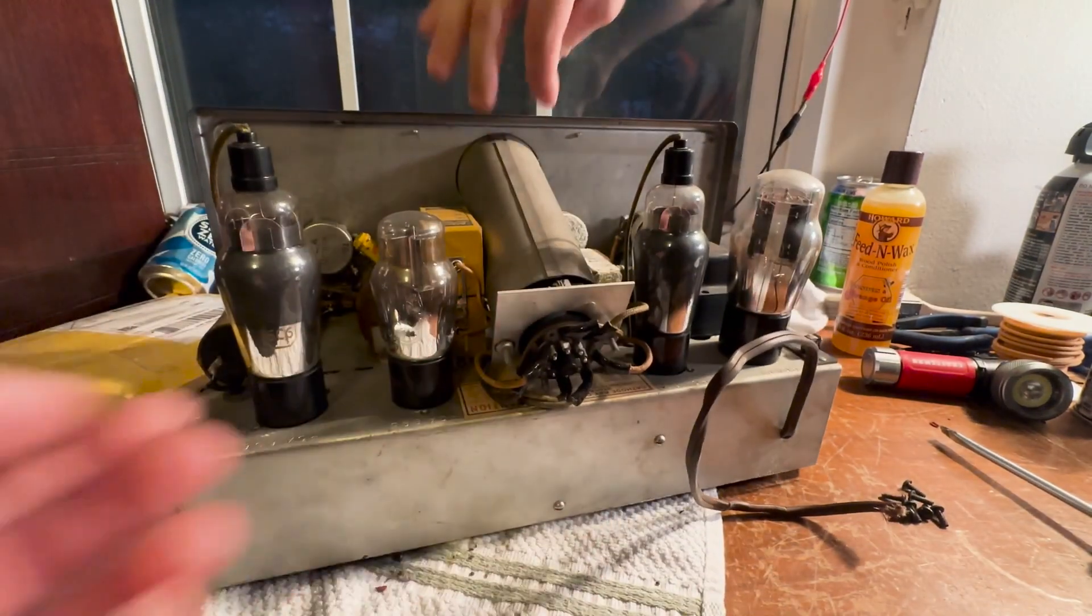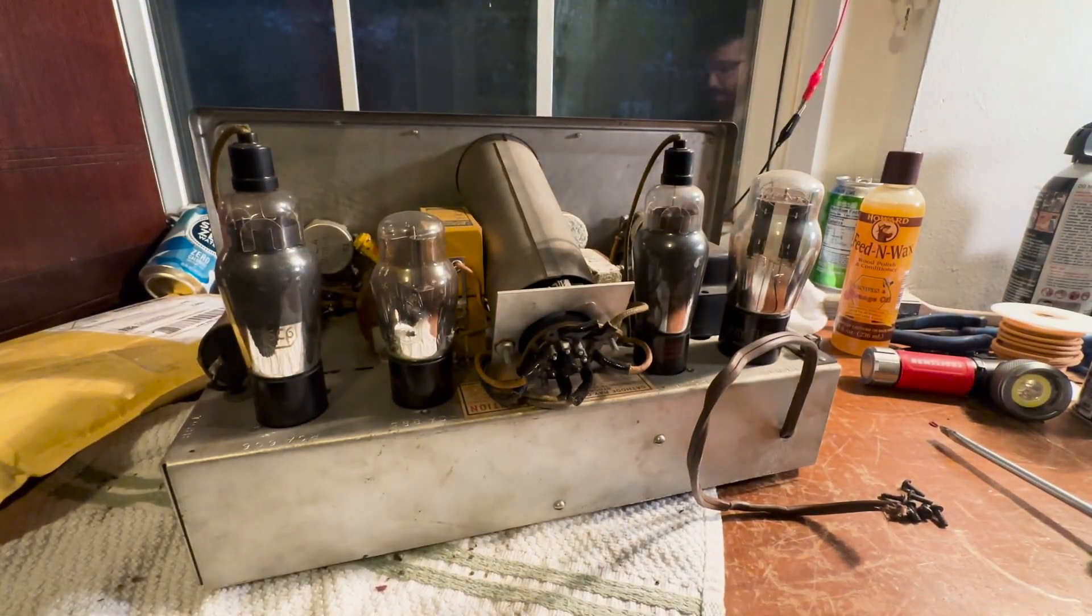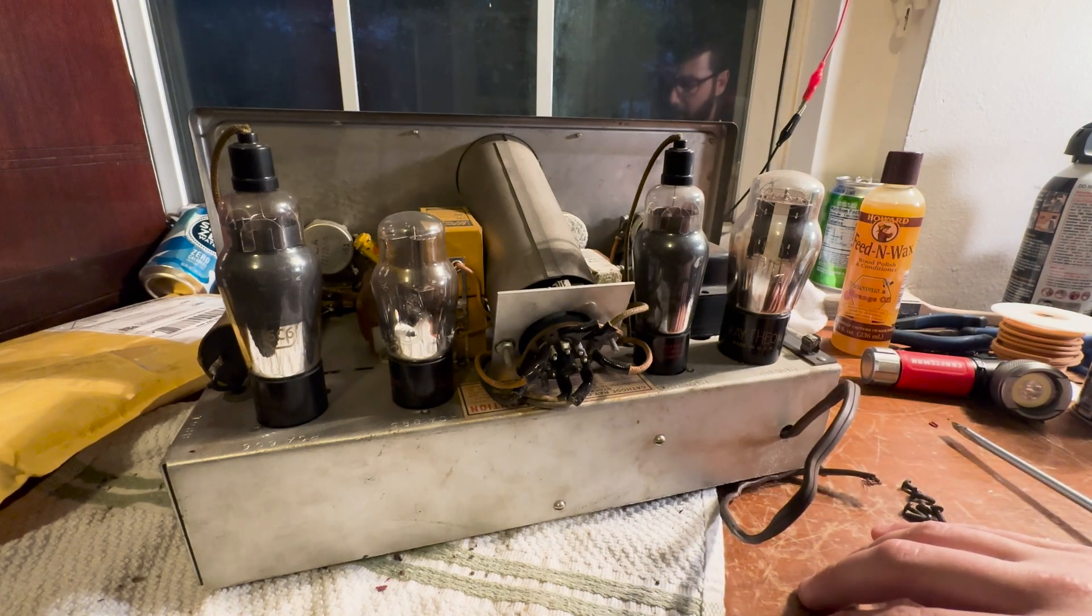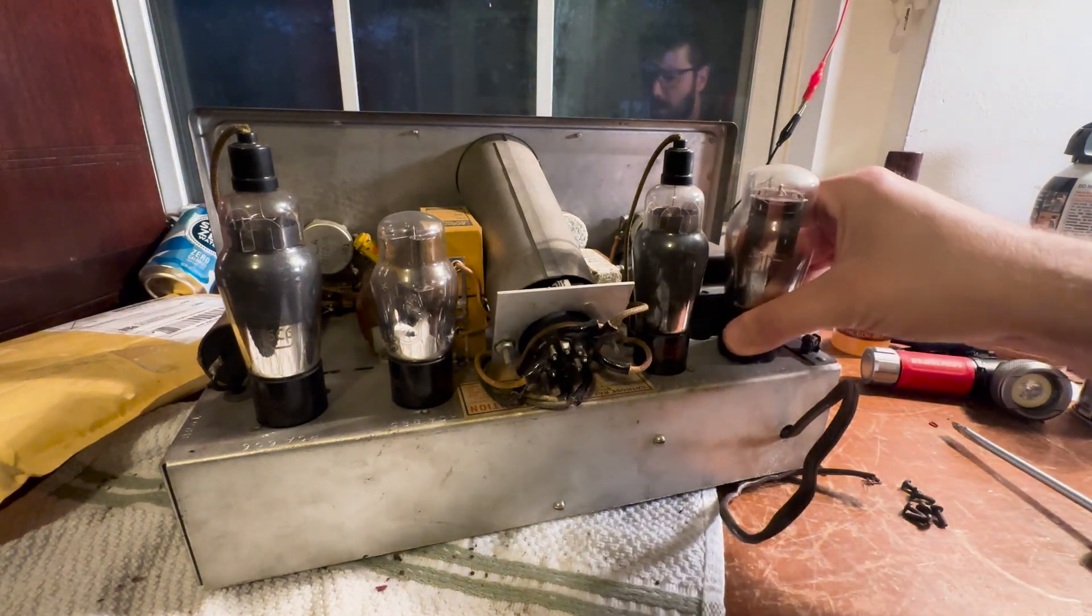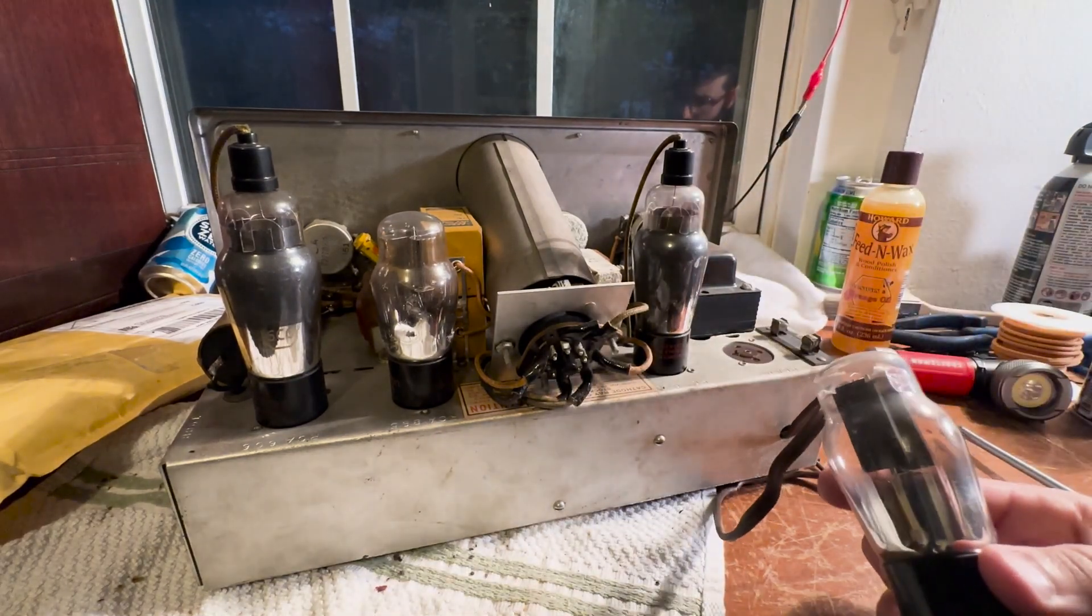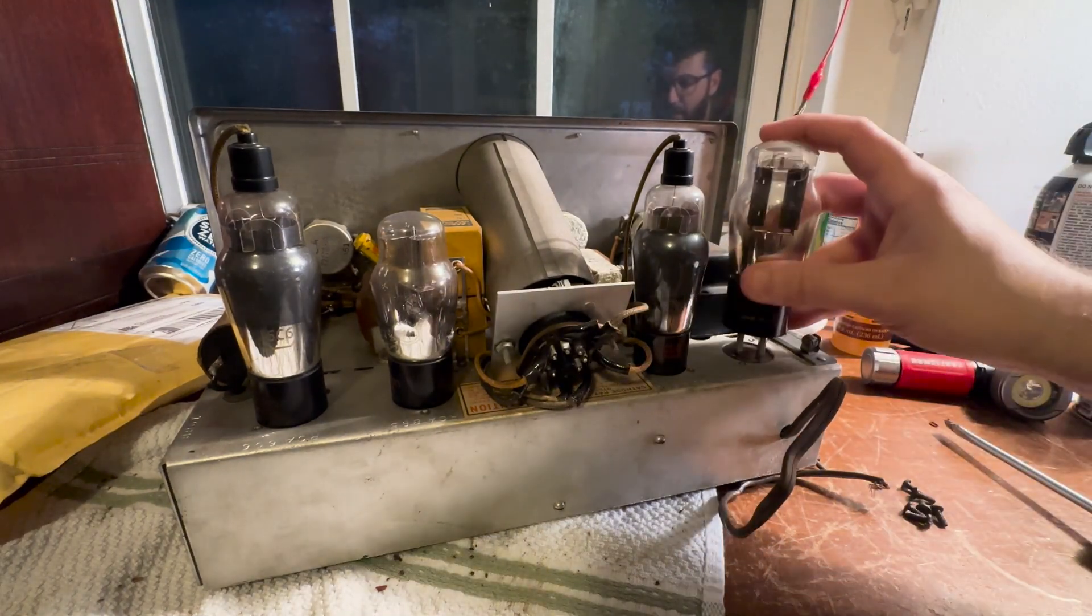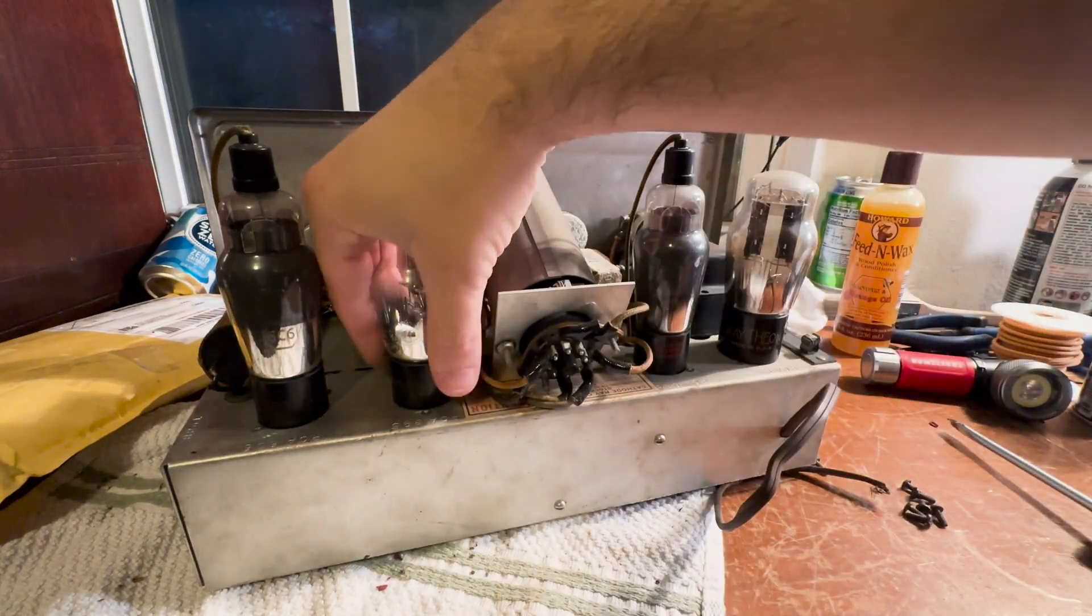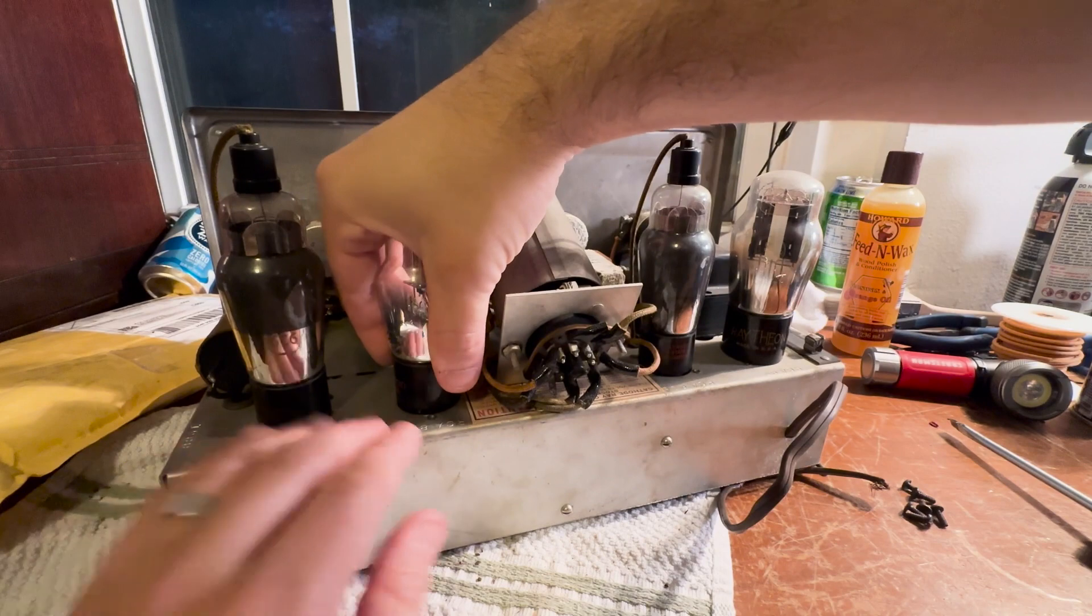How cool is this? Let's see, what tubes do we got here? A Raytheon. That's an 80. We got a 6C6 right there. What else we got here? An 885, a 6C6.